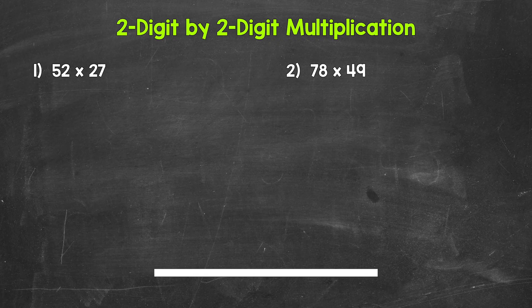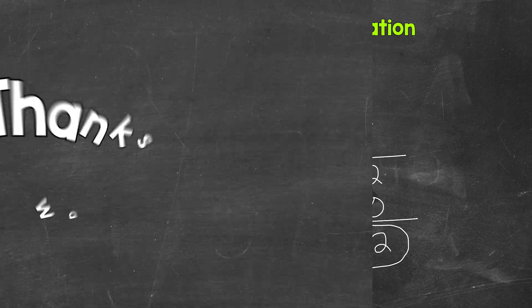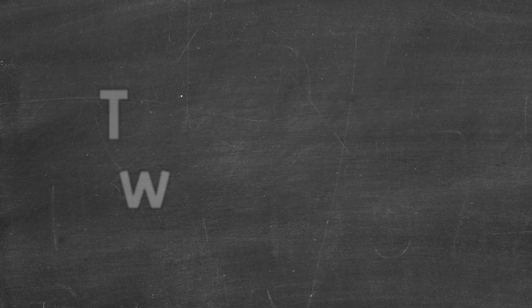Okay, so that was three minutes — let's go over the answers. For number one, 52 times 27 equals 1,404. For number two, 78 times 49 equals 3,822. So there you have it — that's how to multiply a two-digit number by a two-digit number. I hope that helped. Thanks so much for watching. Until next time, peace.